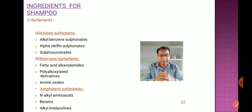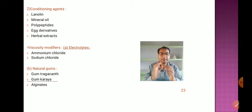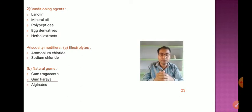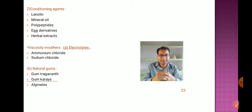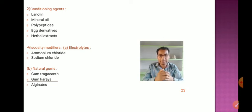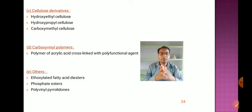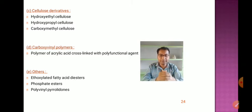Amphoteric surfactants include N-alkyl amino acids, betaines, and alkyl imidazolines. Another main ingredient is the conditioning agent. For conditioning purposes, lanolin, mineral oil, polypeptides, egg derivatives, and herbal extracts are used. Viscosity modifiers are also used to provide viscosity or thickness, such as electrolytes — for example, ammonium chloride and sodium chloride — and natural gums like gum tragacanth and gum karaya.